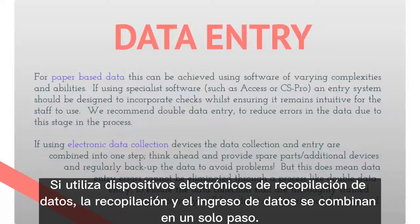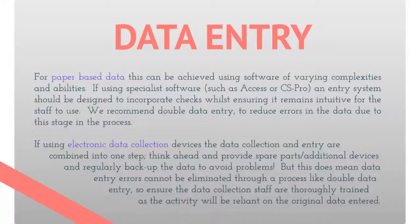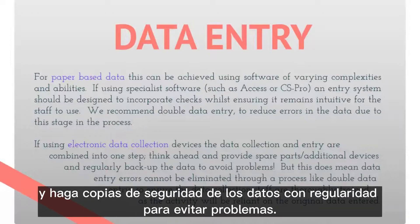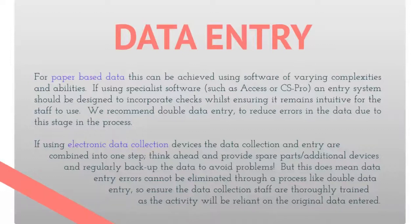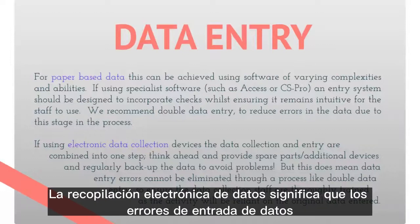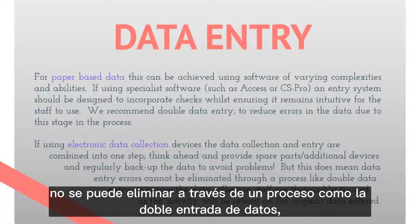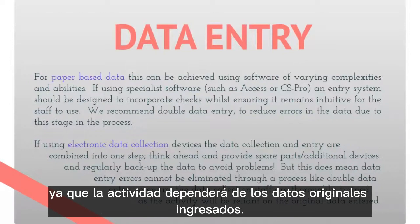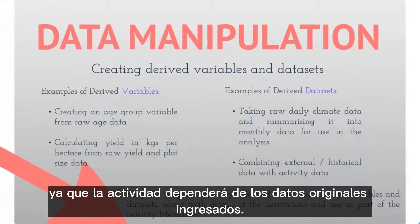If using electronic data collection devices, the data collection and entry are combined into one step. Think ahead and provide spare parts or additional devices, and regularly back up the data to avoid problems. Electronic data collection means that data entry errors cannot be eliminated through a process like double data entry, so ensure the data collection staff are thoroughly trained, as the activity will be reliant on the original data entered.